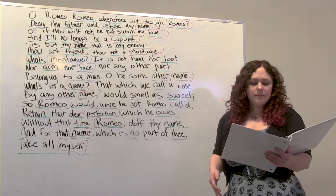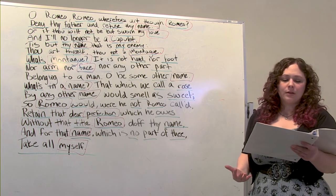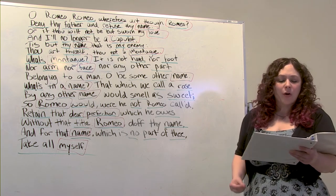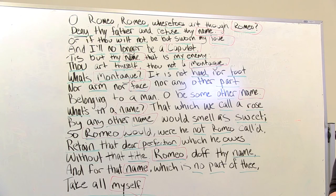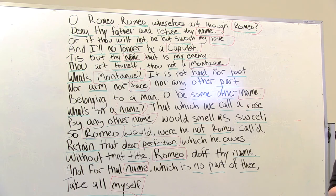So looking at the full text again, read it one more time since you have a better grasp on it. O Romeo, Romeo, wherefore art thou Romeo? Deny thy father and refuse thy name, or thou wilt not be but sworn my love, and I'll no longer be a Capulet. Tis but thy name that is my enemy. Thou art thyself, though not a Montague. What's Montague? Is it nor hand, nor foot, nor arm, nor face, nor any other part belonging to a man? O be some other name. What's in a name? That which we call a rose by any other name would smell as sweet. So Romeo would, were he not Romeo called, retain that dear perfection which he owes without that title. Romeo, doth thy name, and for that name which is no part of thee, take all myself.